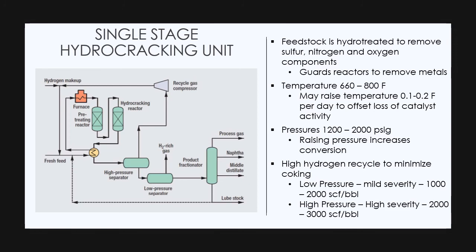Fourth and very important point about the single stage hydrocracking unit is that high hydrogen recycle minimizes coking. In case of low pressure mild severity, the recycle is about 1000 to 2000 SCF per BBL. But in case of high pressure and high severity which produces high conversion, the recycle rate is about 2000 to 3000 SCF per BBL.